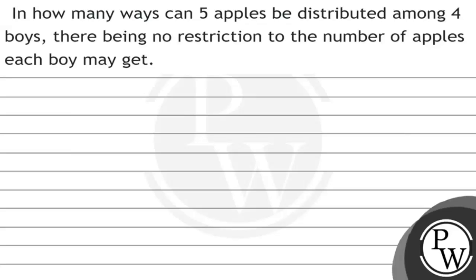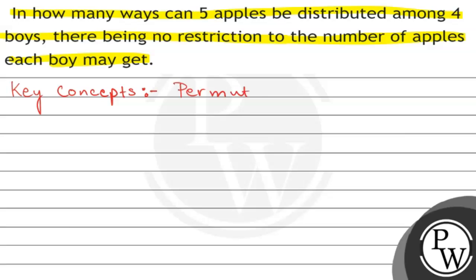Hello, so let's see the question. The question says: in how many ways can five apples be distributed among four boys, there being no restriction to the number of apples each boy may get. The key concepts are that this particular question is related to permutation and combination.